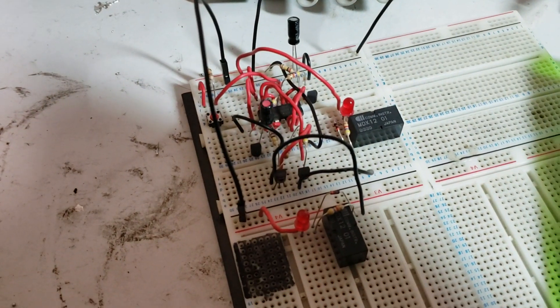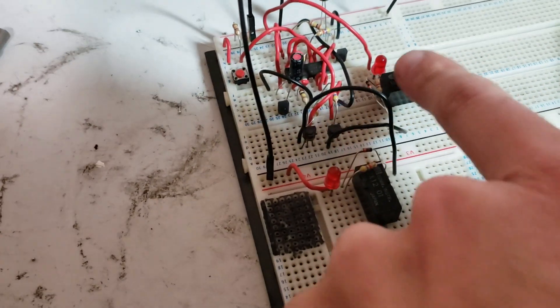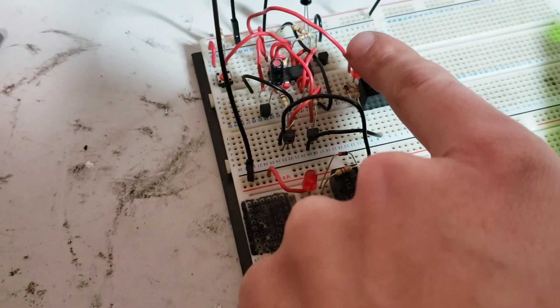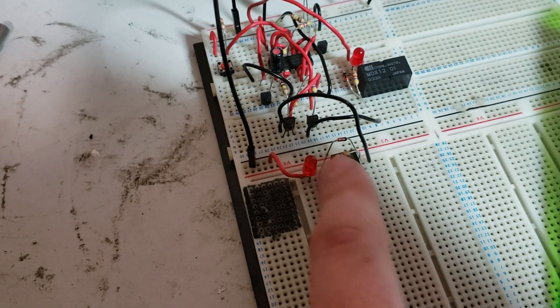So I've got it all breadboarded out here. Basically what this relay is and this LED is connected together. So when the relay is on, the LED is on. And same over here when the relay here is on, the LED is on.